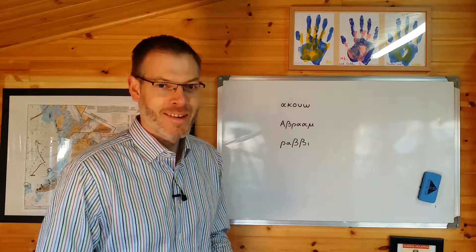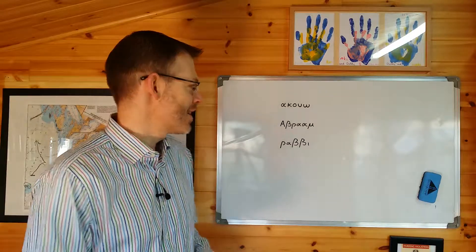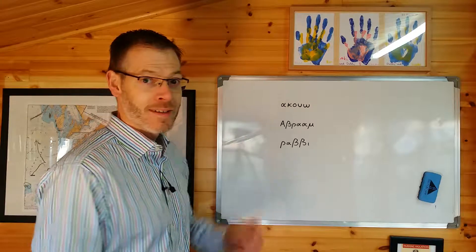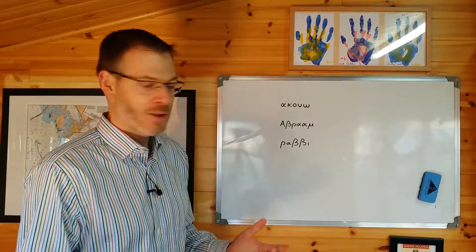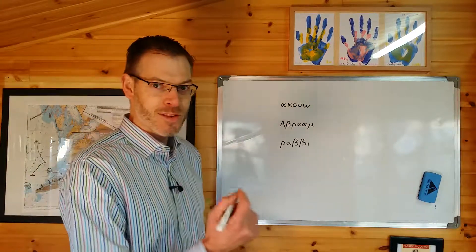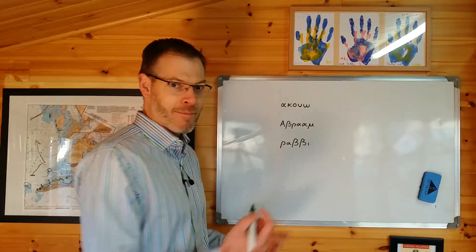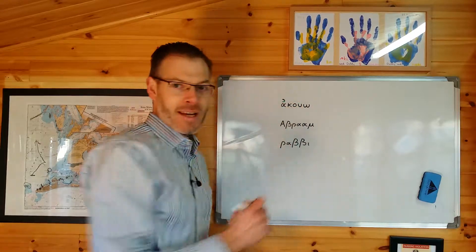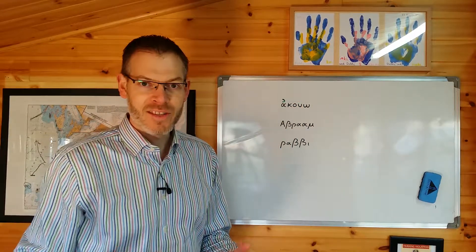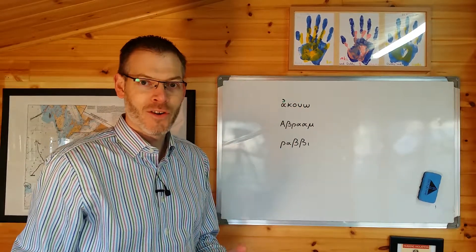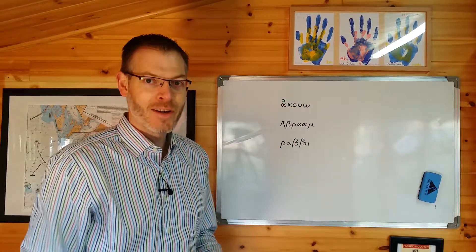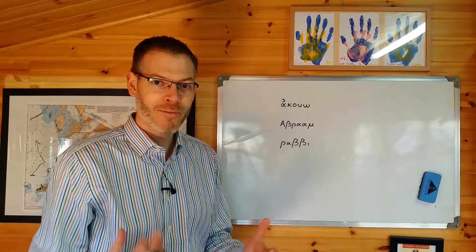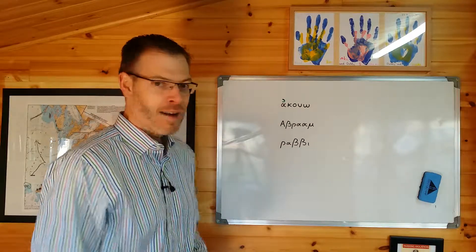Did you pause the video? Which of these needs a breathing? Well, this one needs a breathing — Akuo — because it begins with a vowel, and it needs a smooth breathing, which you should have been able to guess from the way I pronounced it. Akuo, not Hakuo. The A sound means there's no rough breathing — a smooth breathing like that.